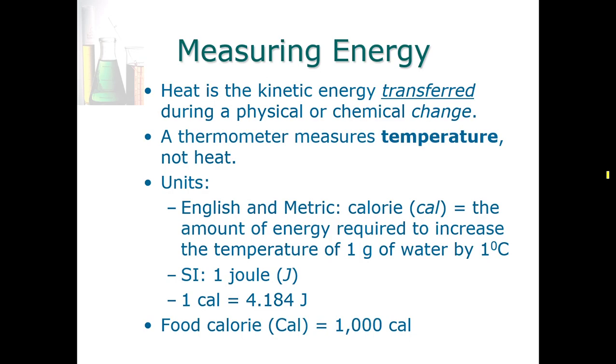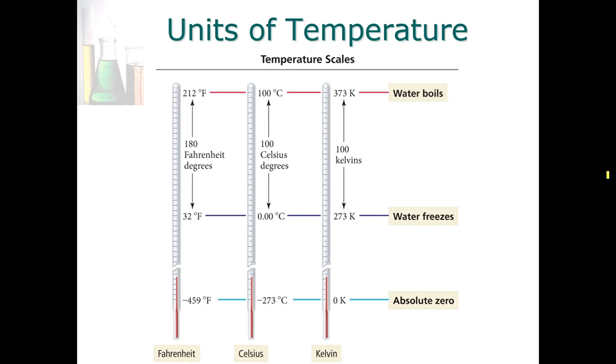Once we do the calculations, we'll find that once more we have different units of energy. In both the metric and the English or common system, we sometimes use the calorie, abbreviated cal. This is the amount of energy that is required to increase the temperature of one gram of water by one degree Celsius. The SI system uses a unit called the joule, capital J. One calorie equals 4.184 joules. Be careful not to confuse these calories with a small c with food Calories with an uppercase C. Each food Calorie represents one thousand of these calories that we've defined here.